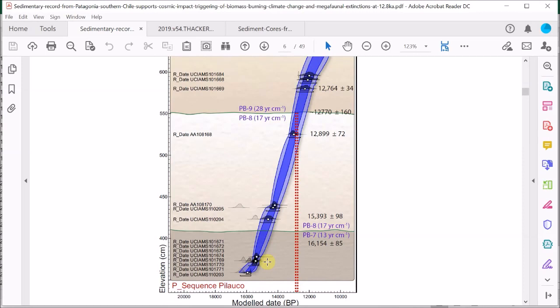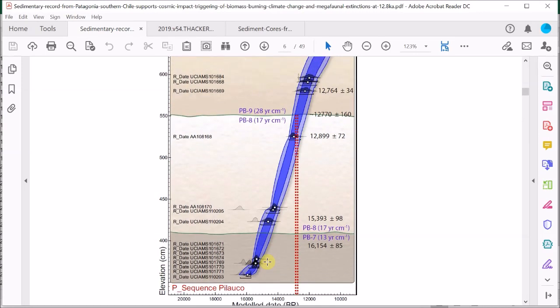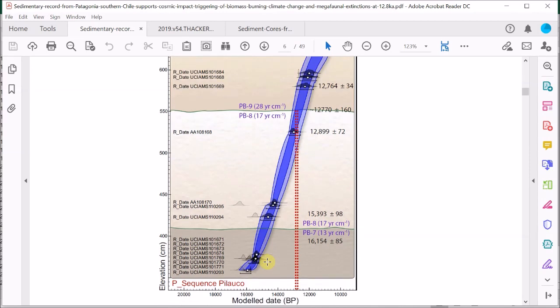Now further on in the paper is their age depth model for a different trench which is very close to the ones I've just shown. In this trench, the boundary between PB8 and PB9 is almost exactly at 550 centimeters relative to the datum.